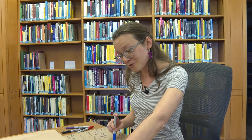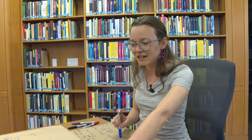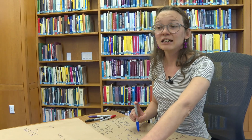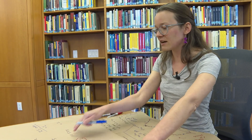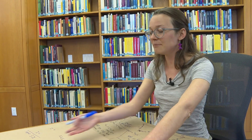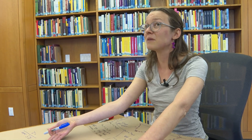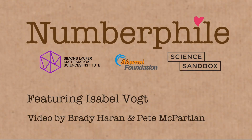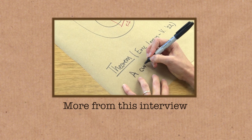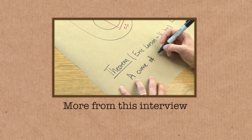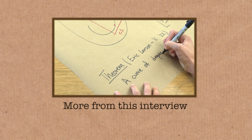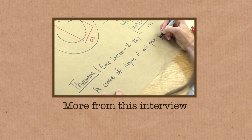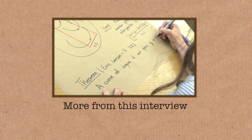It might not seem impressive for 16 numbers — 16 vs. 18 versus 32 or 48 — but the one or two extra values is independent of the number of numbers. For a million numbers, sending a million and two is far better than sending two million. Here's a theorem I proved with my collaborator Eric Larson: a curve of degree d and genus g in r dimensions...